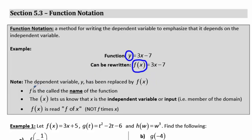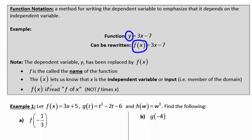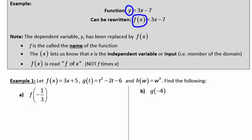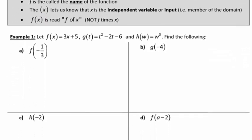So f in function notation is the name of the function, and the of x piece tells us that x is the independent variable. This is particularly useful when you have a function that has more than one variable in it. A couple other notes: f of x is read as f of x. This is not a multiplication. These parentheses are not representing multiplication here. It's representing what value you should plug in for the variable.